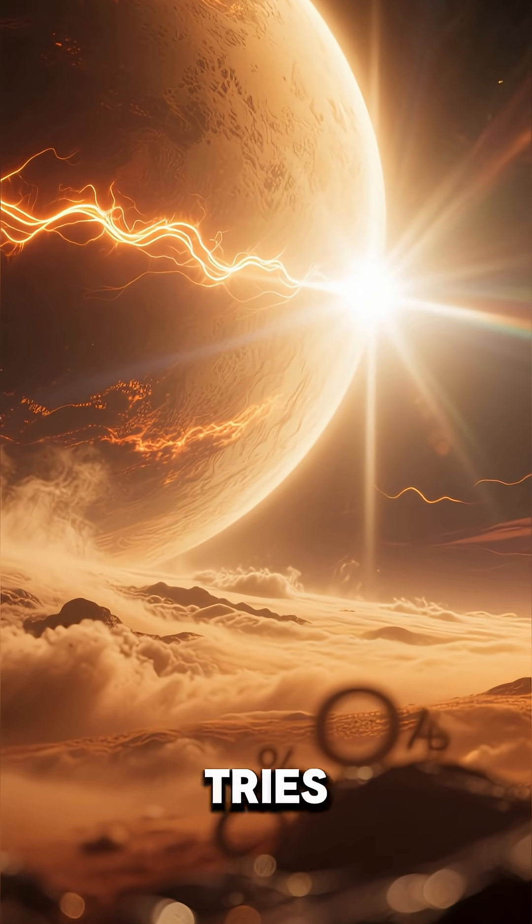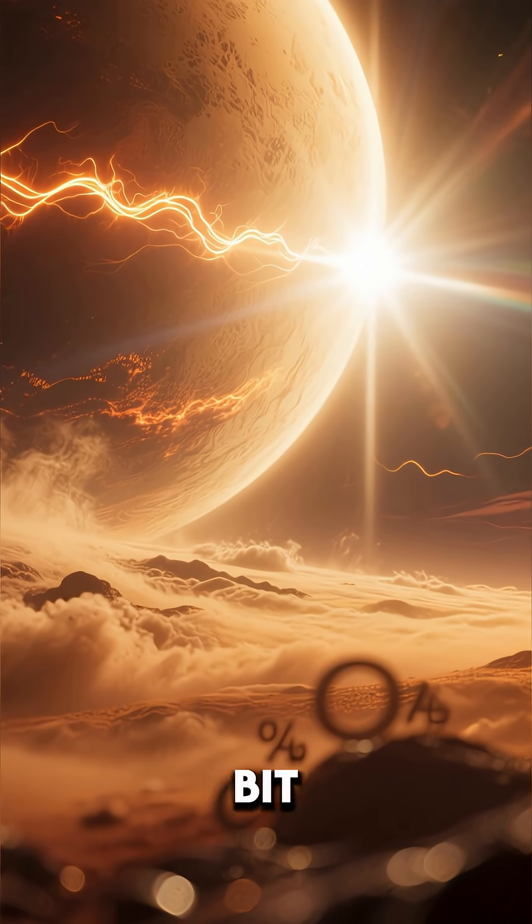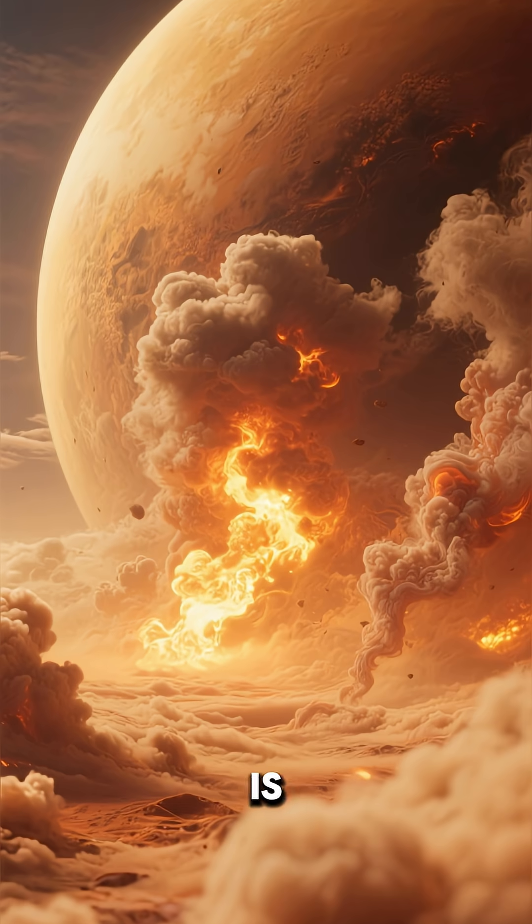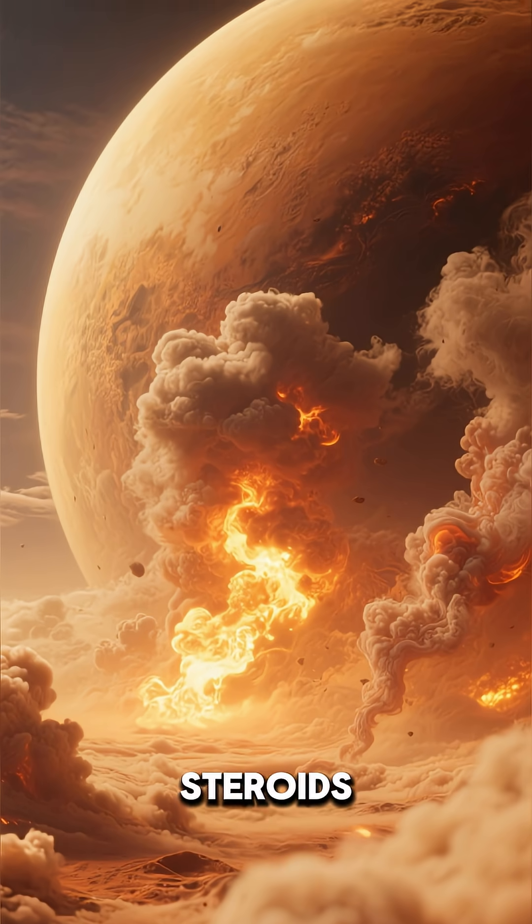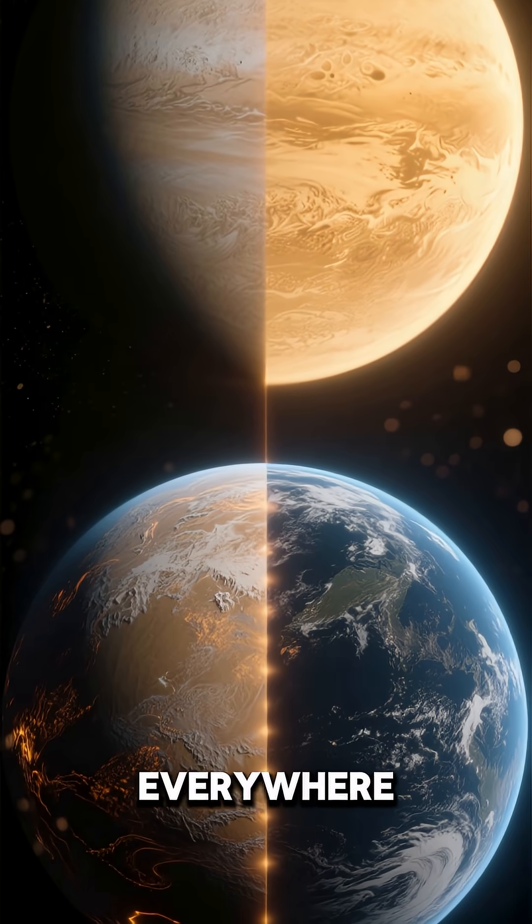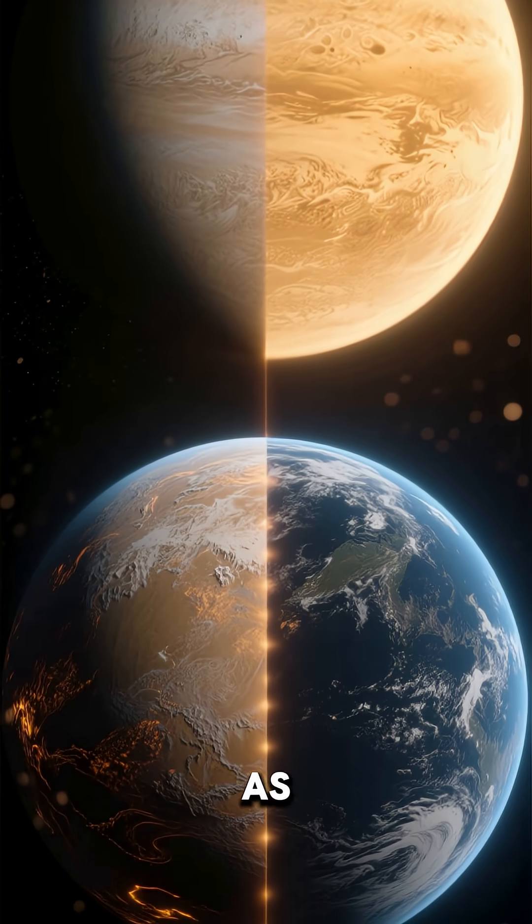But when the planet tries to cool down, the carbon dioxide traps every bit of that heat. This is the greenhouse effect on steroids. The heat literally has nowhere to go. And this insane atmosphere spreads the heat everywhere. So even the night side is just as hot.